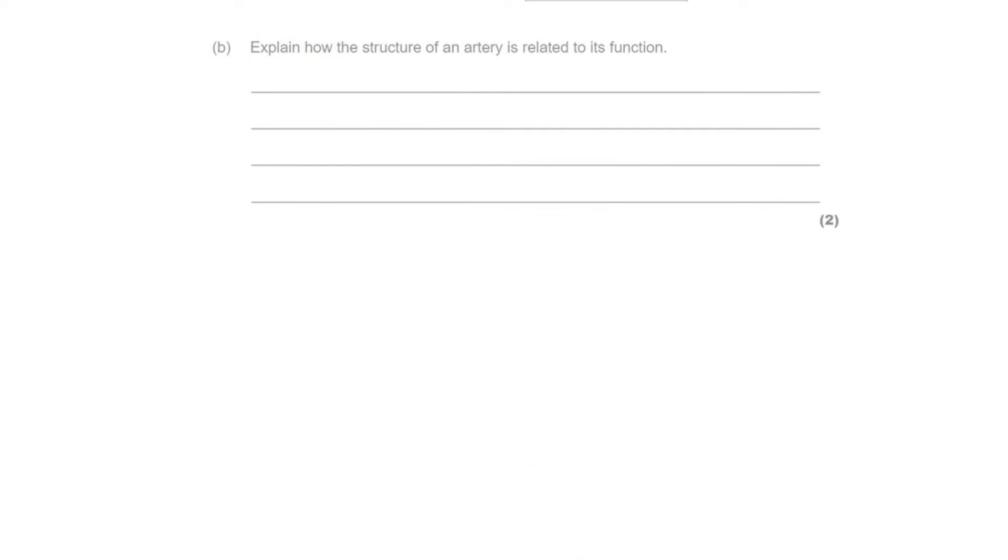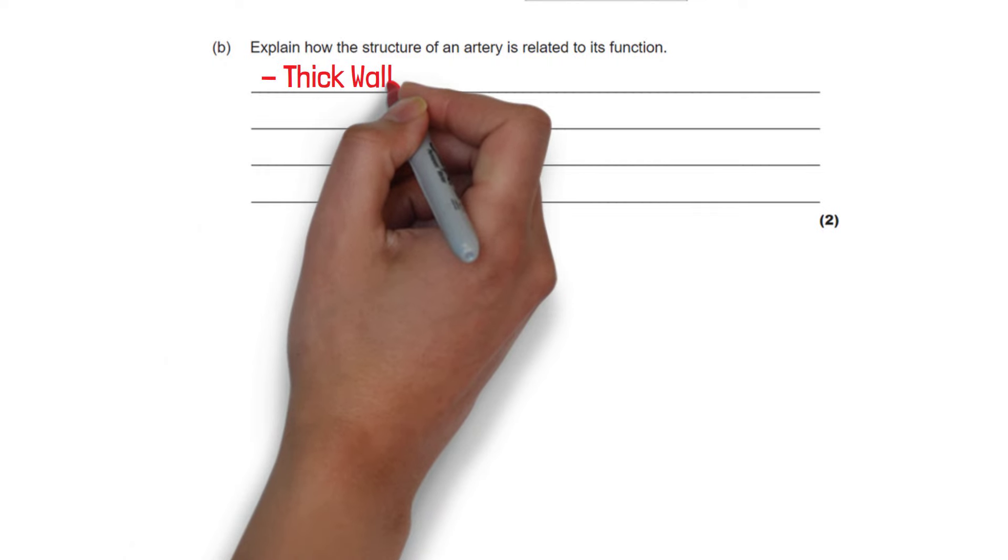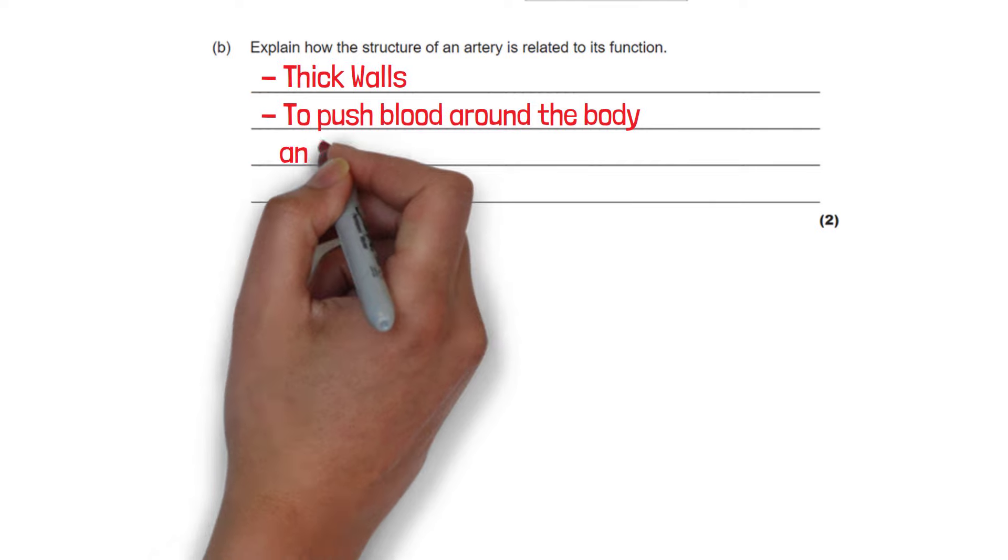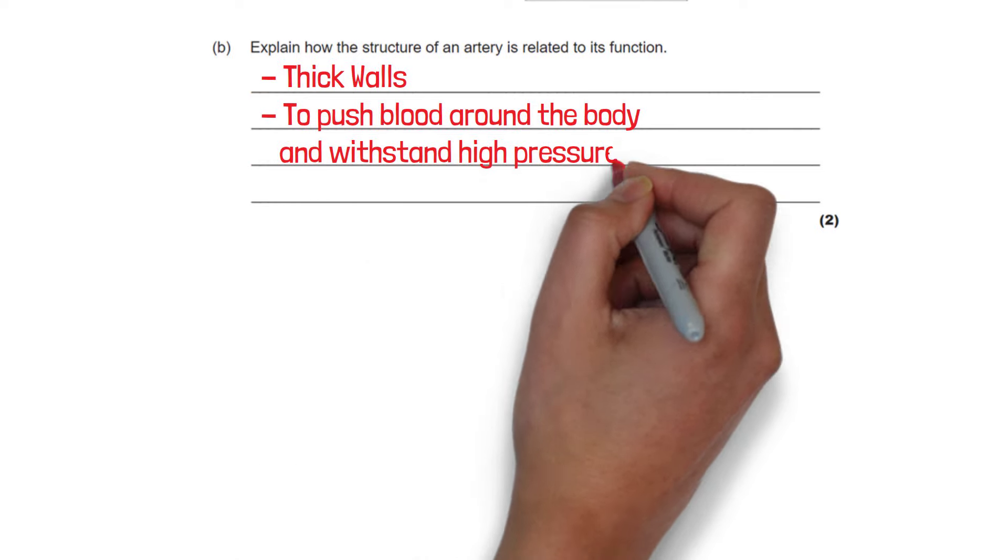The follow up question is asking us to explain how the structure of an artery is related to its function. So we can describe what the picture was showing which was it has thick walls. It has these muscular walls because it needs to push blood around the body and withstand high blood pressure.